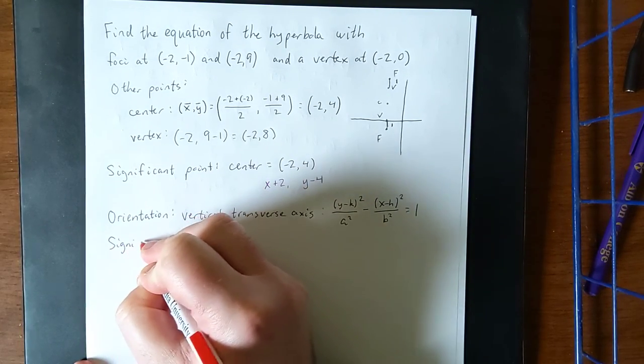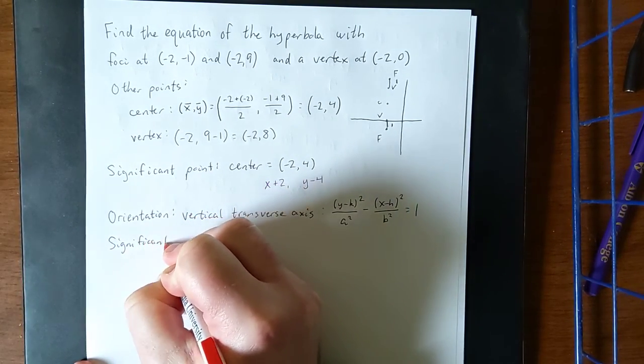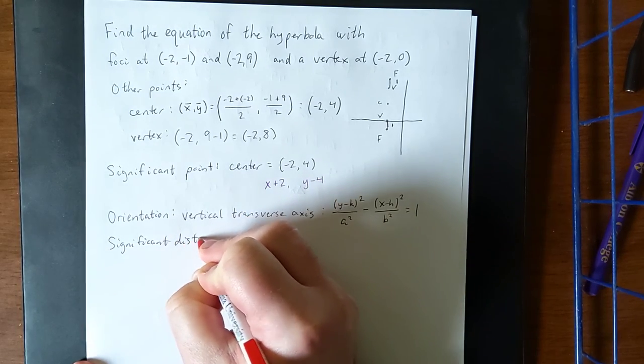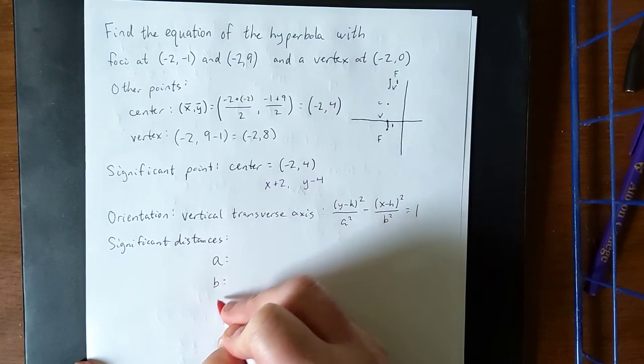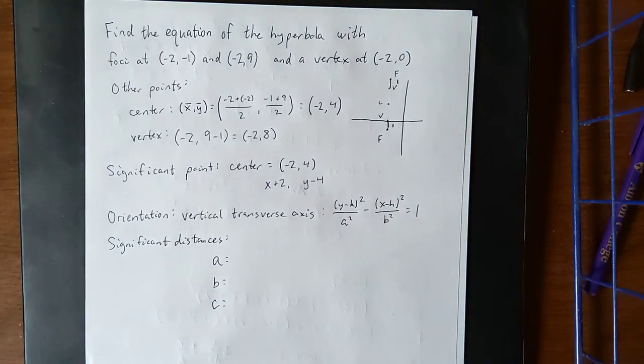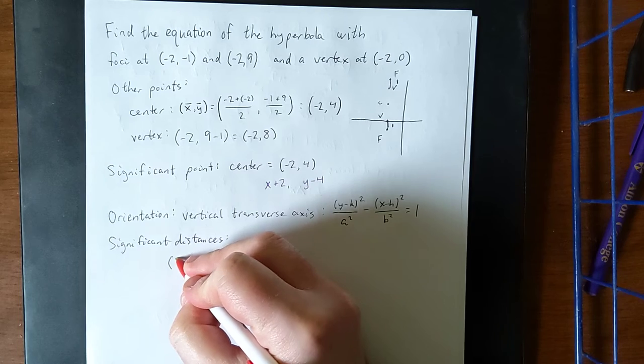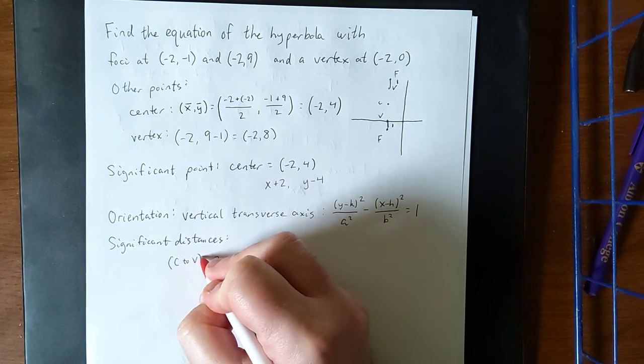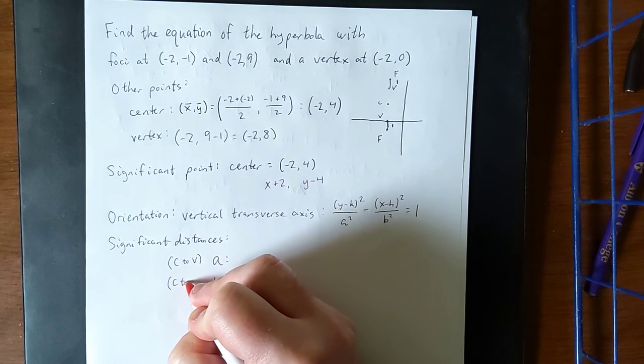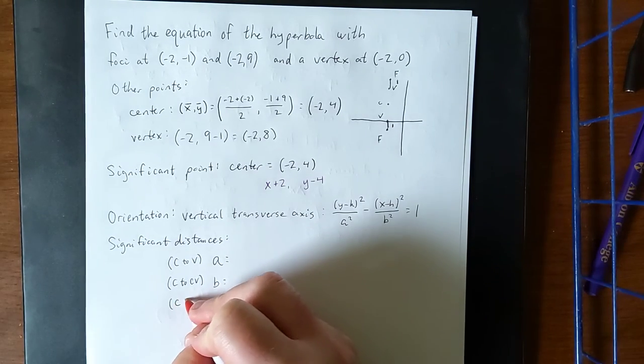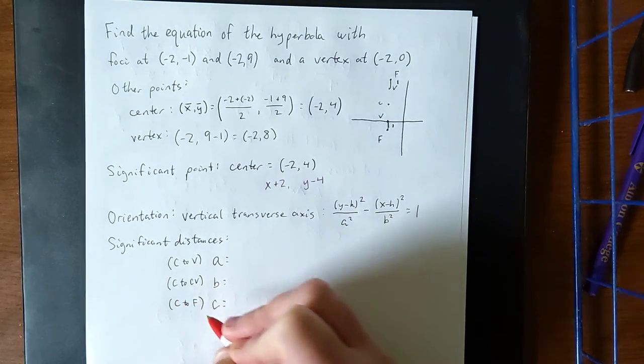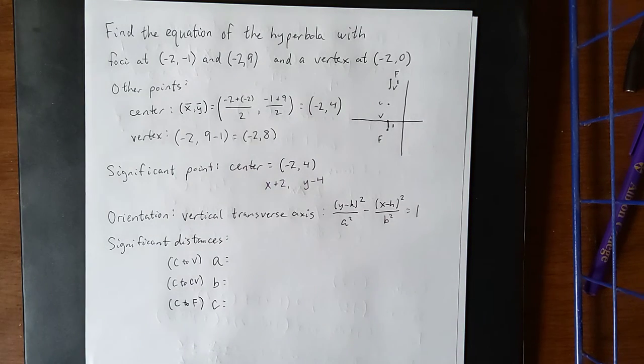And finally, the significant distances. As a reminder of what these are, this would be a, b, and c. A represents the distance from a center to a vertex, b represents the center to a co-vertex, and c represents the center to a focus.